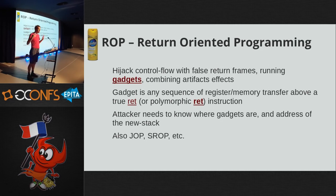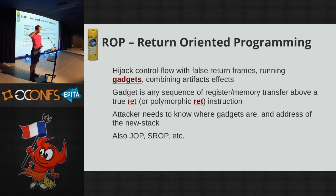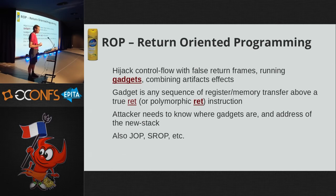On x86 architectures it's even worse because you don't just have return instructions — because it's a variable-sized architecture you also have polymorphic sequences that occur in the instruction stream. For example, if an instruction loads a value containing the byte 0xC3, that byte occurs in the instruction stream as a return, so the instructions before the load — whatever their meaning — can be used by an attacker as gadgets. It's a terrifying architecture. The attacker needs to know a few things; there are also techniques called JOP and SROP which tie into this.